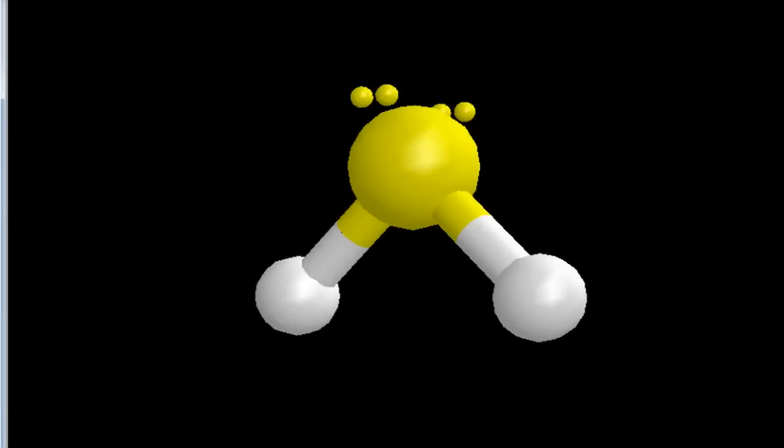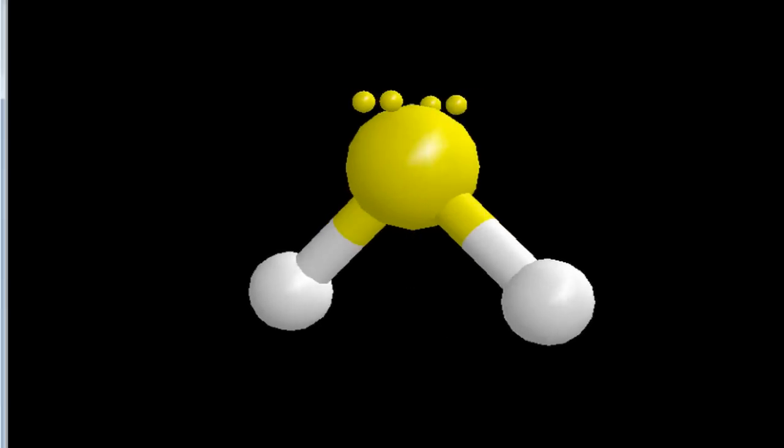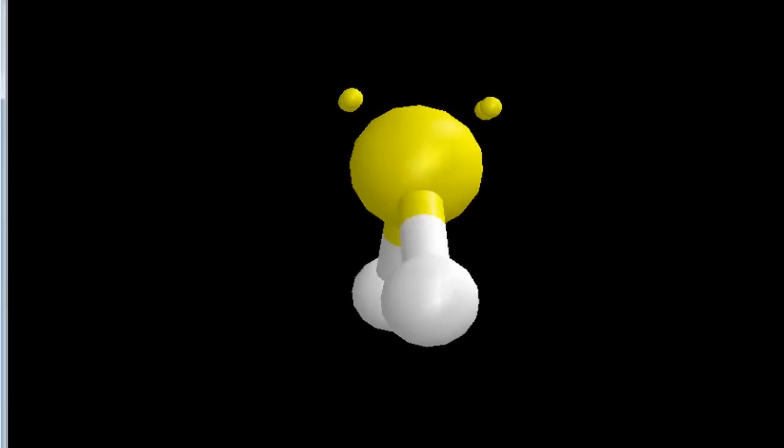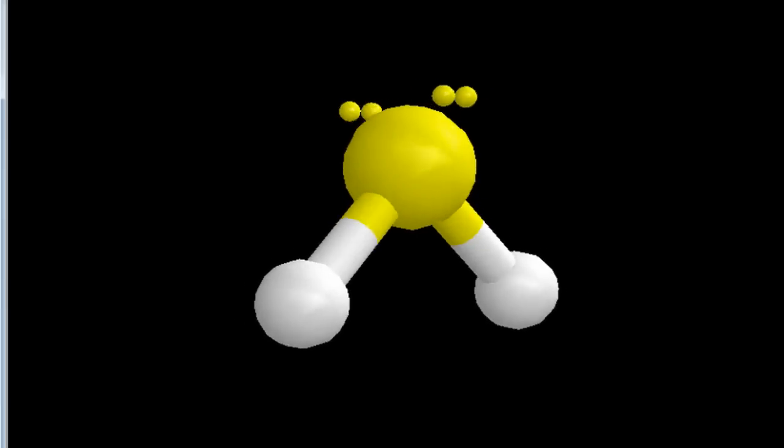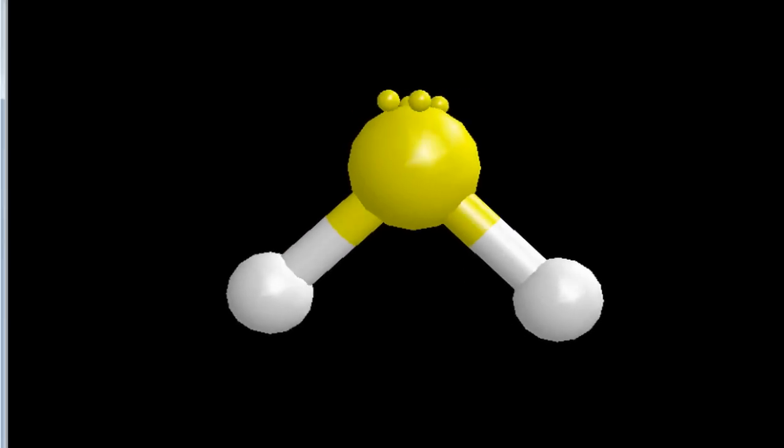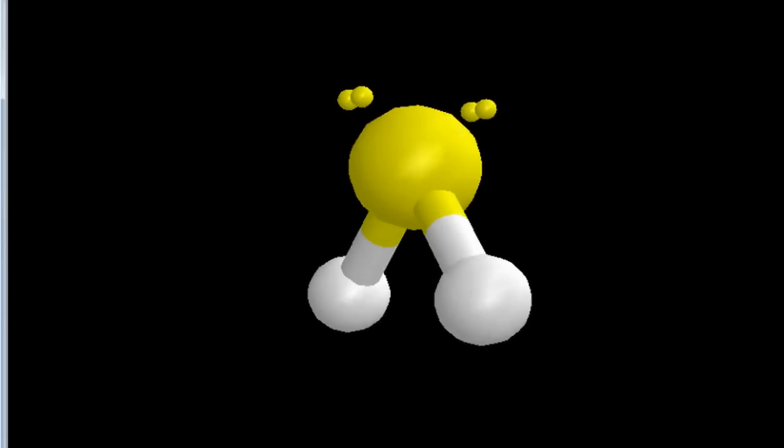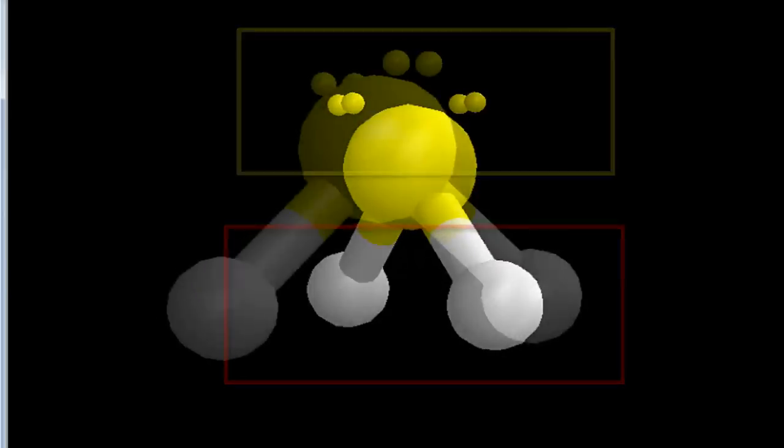As the electron pairs and the fluorines spread out, we end up with this bent geometry. What we can see from this is that we have two unequal sides: the sides where the fluorines are and the side where those lone pair electrons are.